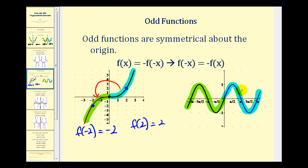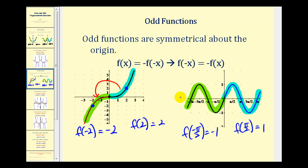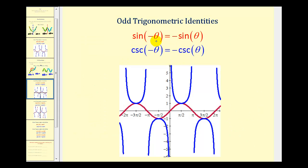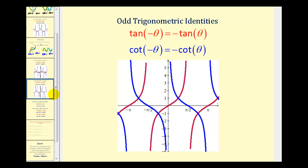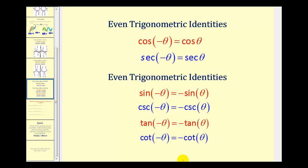For the trig function, notice that f of pi over two is equal to one, and f of negative pi over two is equal to negative one. So let's take a look at the odd trig identities. Here they are for sine and cosecant, because these are odd functions. And the same is true for tangent and cotangent — tangent and cotangent are odd functions, therefore they have rotational symmetry about the origin. And here's a summary of those identities.